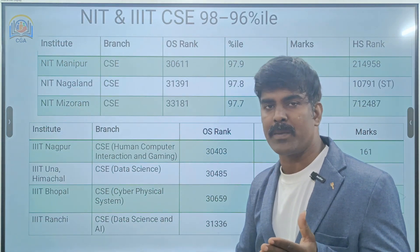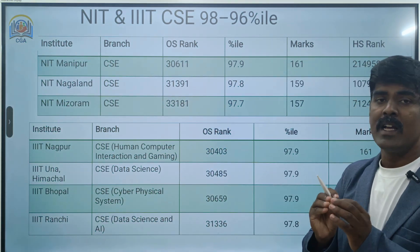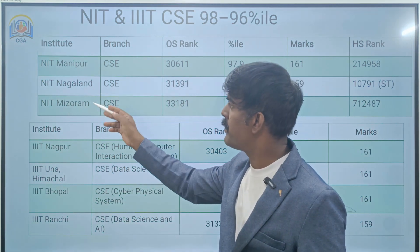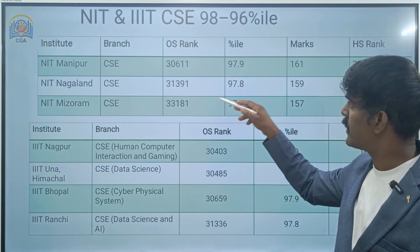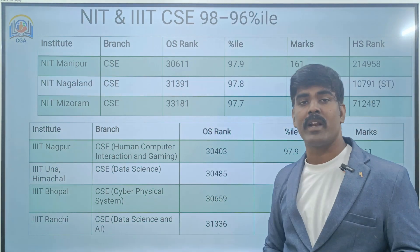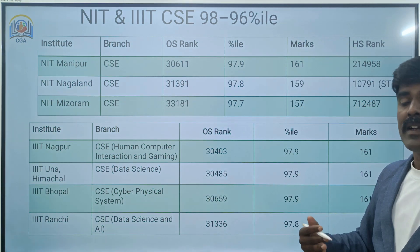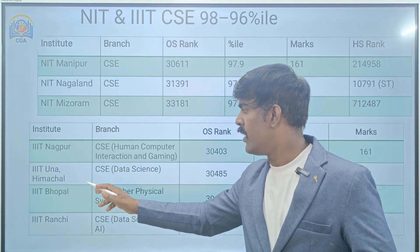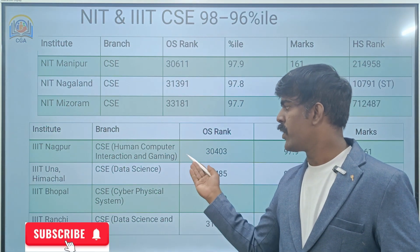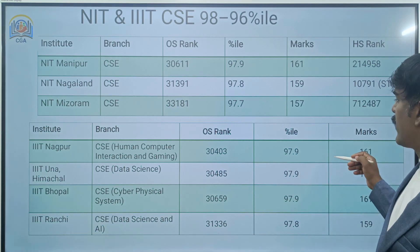Now we have seen 99-plus percentile and 98 to 99 percentile. Now we will see 96 to 98 percentile. Even Tier 3 NITs — Nalanda, Mizoram, Manipur — CSE closing ranks around 33,000. NITs like Nagpur, Himachal, Bhopal, Ranchi at 31,000 for CSE. For CIC-related courses — human-computer interaction, data science, cybersecurity, AI — you can use these IIITs for those specialized courses.